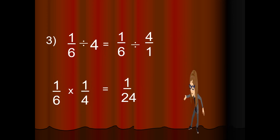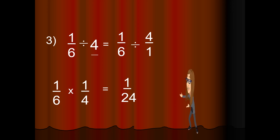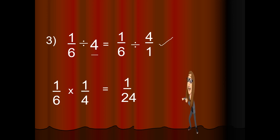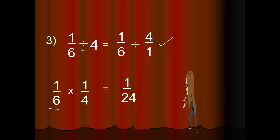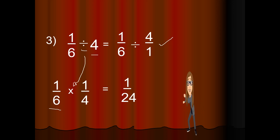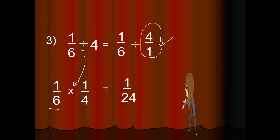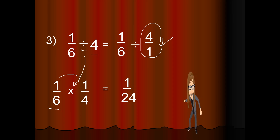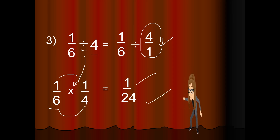Number 3: we have 1 over 6 divided by 4. You rename 4 as 4 over 1, keep 1 over 6, change the sign of division to multiplication, flip or get the reciprocal of 4 over 1 which is 1 over 4. Proceed to multiplication: 1 times 1 is 1, and 6 times 4 is 24. Very good.